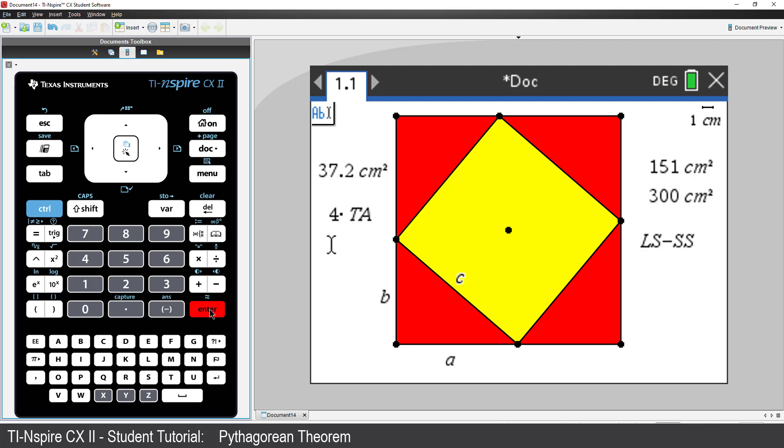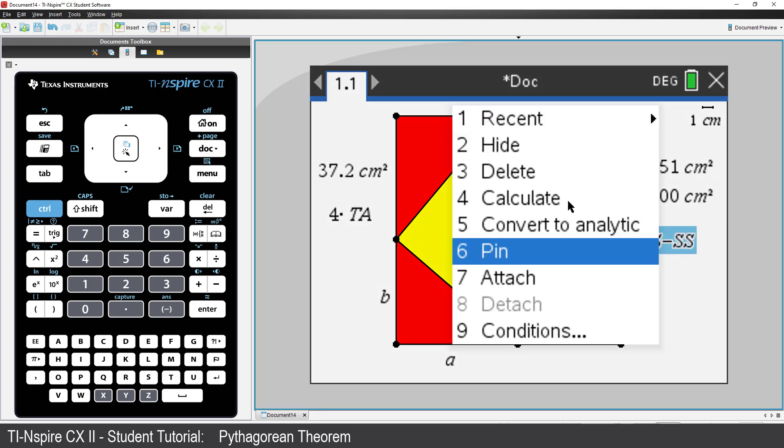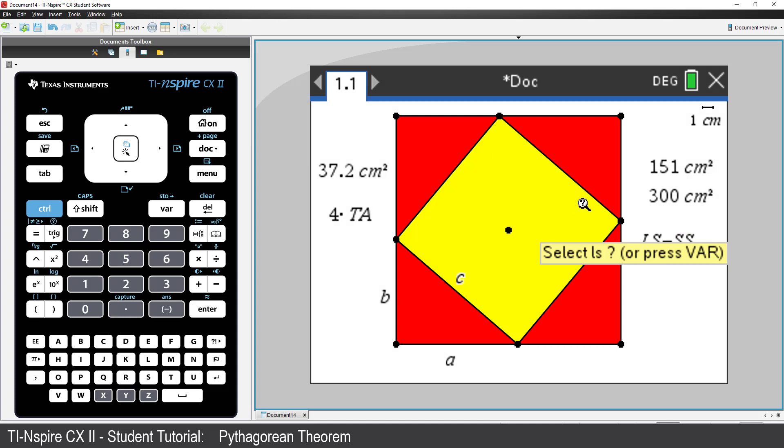We can now calculate each of these expressions. Move the mouse over the expression. Notice the tooltip says Text. Press Control followed by Menu, and select Calculate. The text prompt is looking for the variable LS, large square. Move the mouse over the measurement and click.